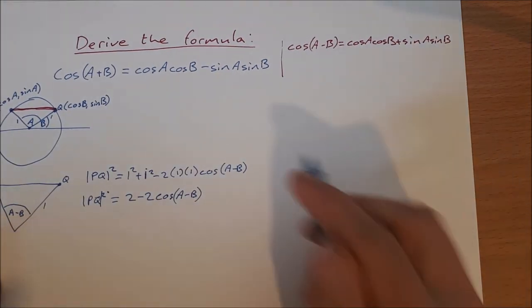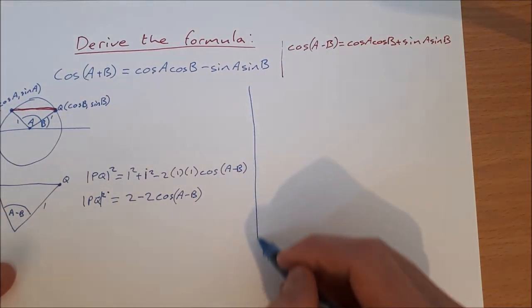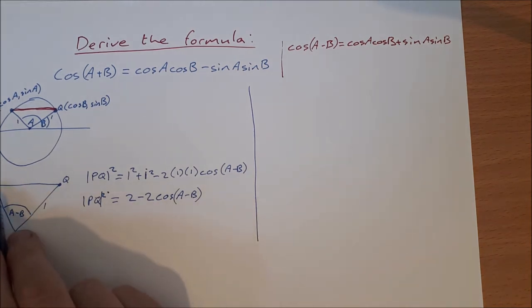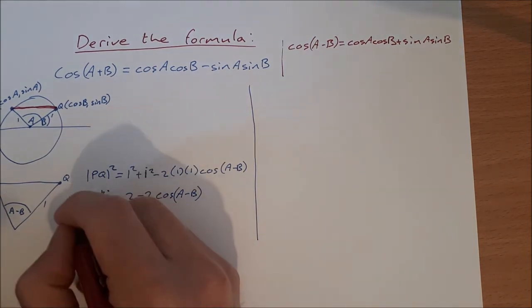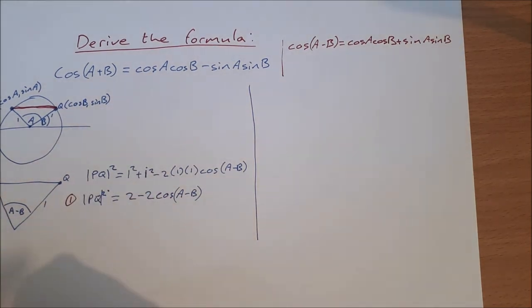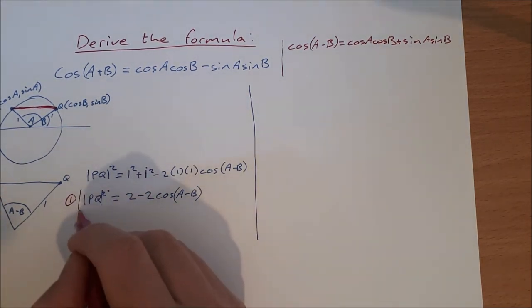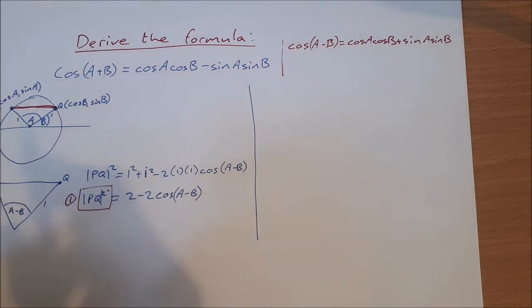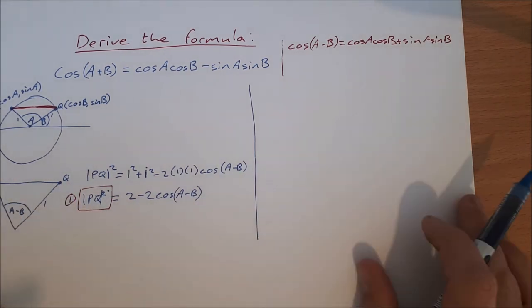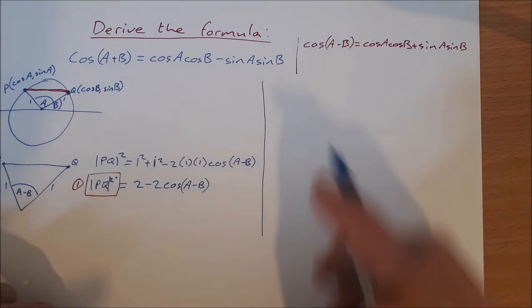The second thing that we do then is we do the same, find the same distance from P to Q. I'll just note that as equation 1, just to show you that PQ squared is what's going to be important coming down the line.